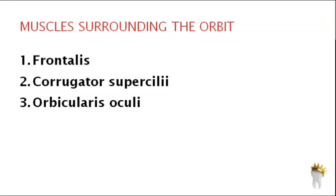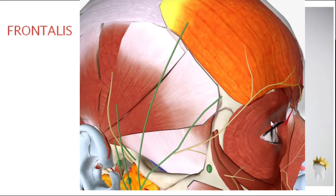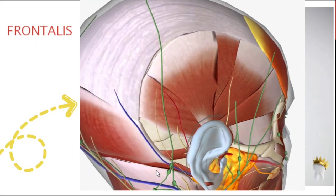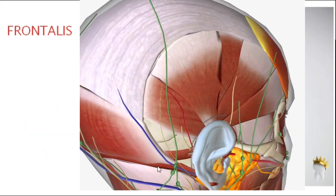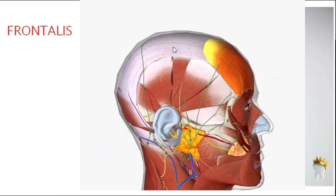Let's see the muscles surrounding the orbit. Number one is frontalis — actually occipitofrontalis, which is one muscle and not two. The frontal belly and occipital belly are its two parts. This muscle has no bony attachments; it arises from the epicranial aponeurosis.